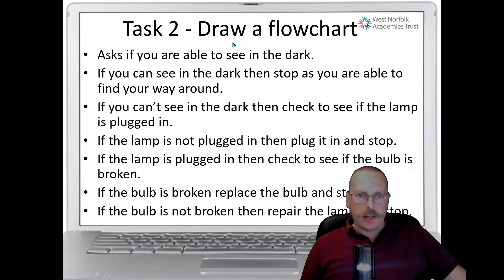Okay welcome back. Your next task is to draw another flowchart. And this one is going to ask if you're able to see in the dark. If you can then your flowchart can go right to the end because you're able to see your way around. But if you can't see in the dark then you need to check to see if the lamp is plugged in. If it is plugged in then that's fine. But you need to find out if the bulb's broken because if the light has switched on. If the lamp is not plugged in then you need to plug it in and stop. If you've switched your lamp on, if it's plugged in and it's still not lighting up it could be because the bulb is broken. So you need to see if bulb is broken. If it is replace the bulb and stop. If the bulb is not broken then there's clearly something wrong with your lamp. So you need to repair your lamp and stop. So again you're going to need to pause the video to draw your flowchart to see if you put this information into the flow diagram. So pause now.